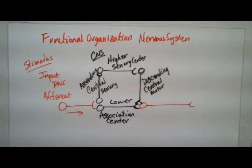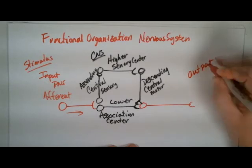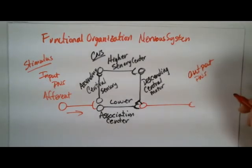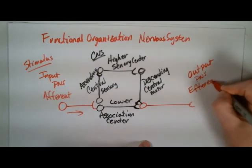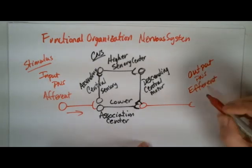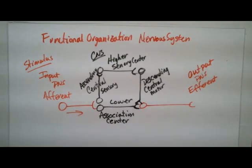The descending pathway leads to the output side, which is also peripheral nervous system and efferent. This includes motor neurons and can be autonomic — sympathetic or parasympathetic. This is what sends the signal out that causes an effect on whatever muscle or gland we have.